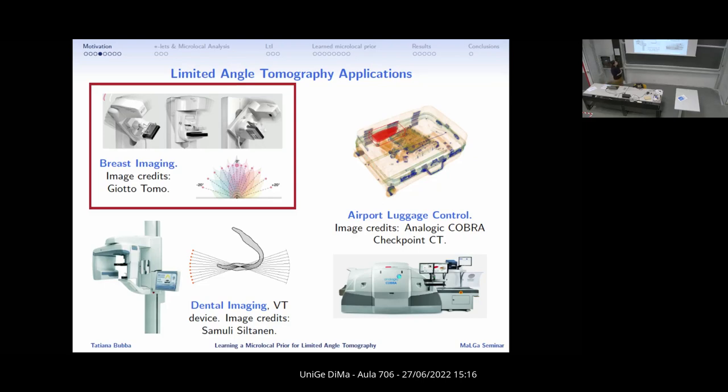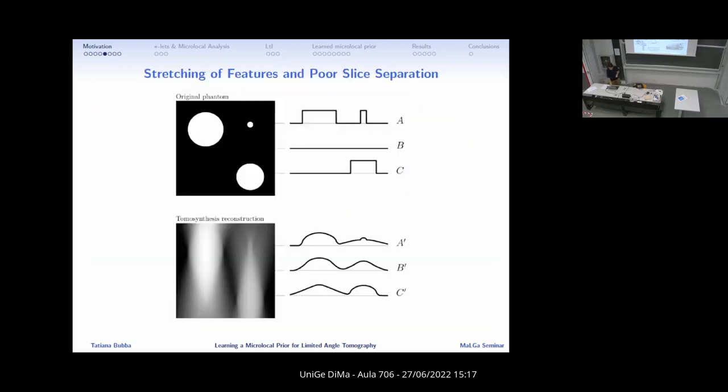The scanner you see there is a digital breast tomosynthesis machine, which are some form of new mammography device that are able to produce 3D images instead of two-dimensional ones. The visible angles are usually from minus 20 to 20, and since these are designed to do screening controls, they have to lower as much as possible the X-ray radiation to avoid that you actually get cancer from doing the screening. So they only take generally 11 to 15 views in this already very narrow angle. The detector is fixed and only the X-ray source moves.